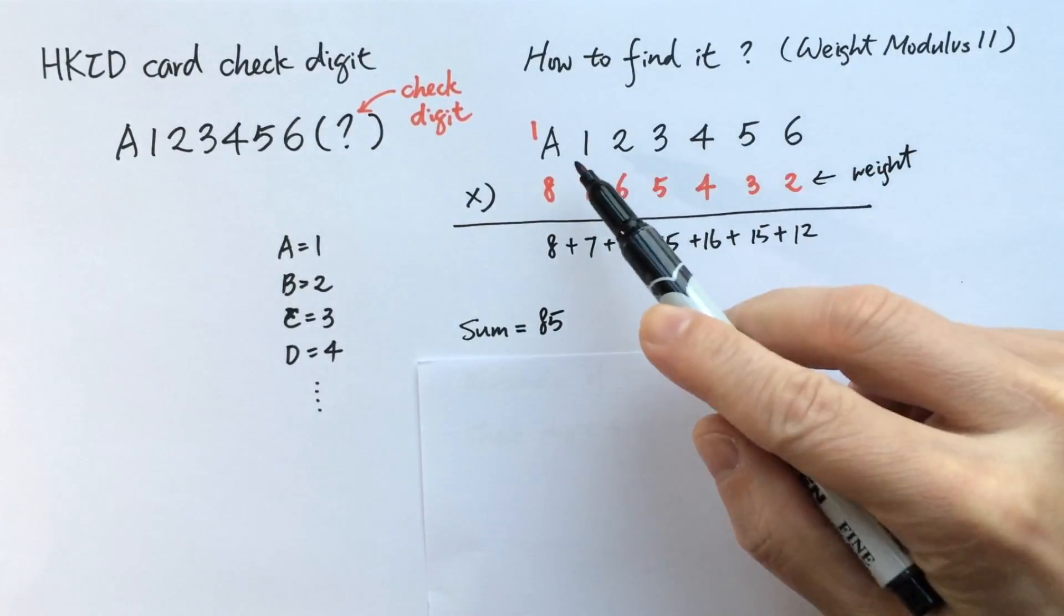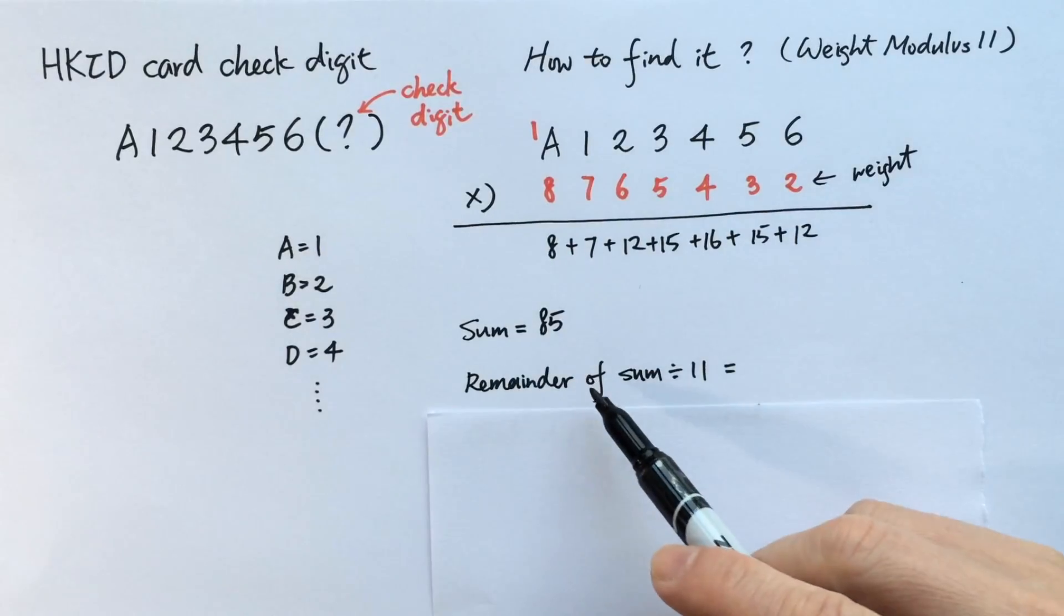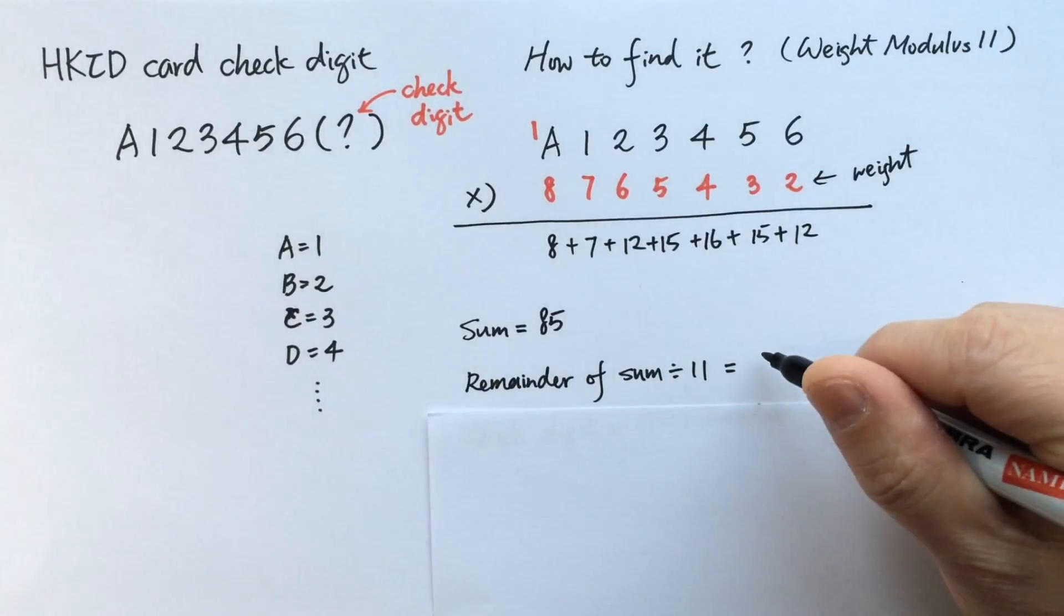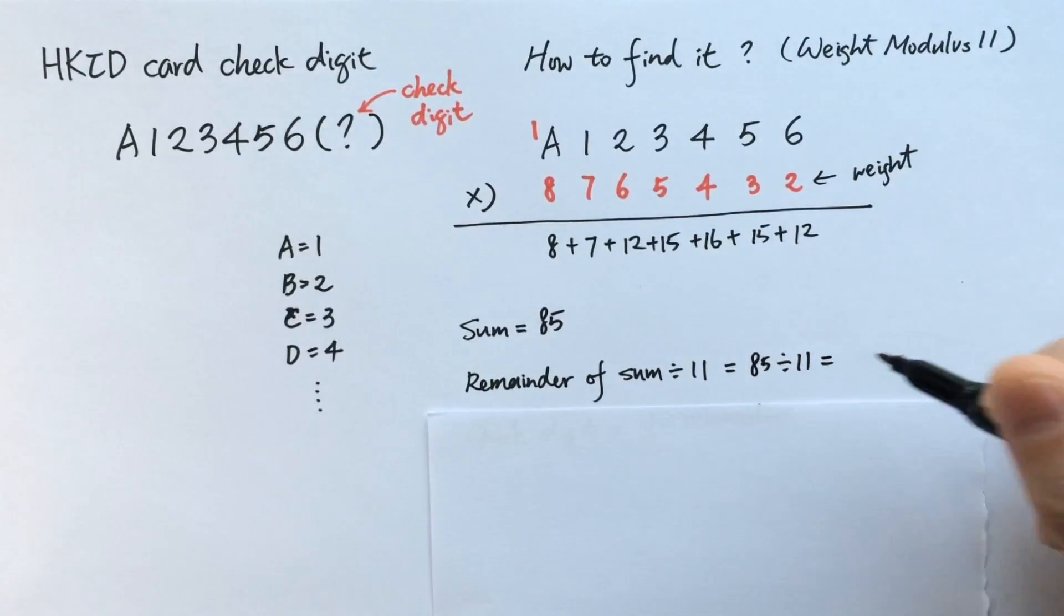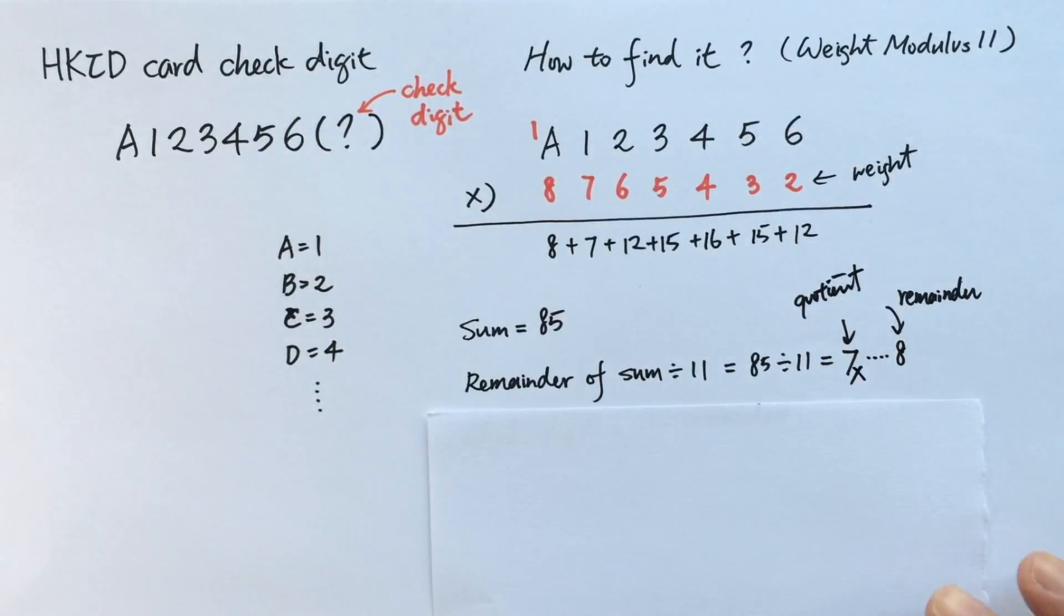And then we find the remainder of this sum divided by 11. So 85 divided by 11, you get the quotient is 7, the remainder is 8. And let's forget about the quotient, we just focus on the remainder.